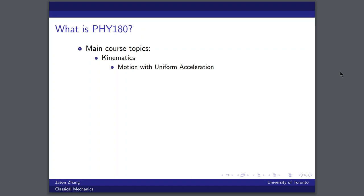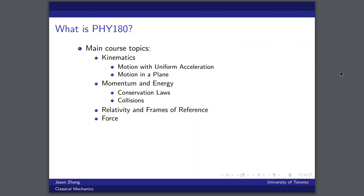As for the main course topics, we went over kinematics - that includes motion with uniform acceleration, motion in the plane, so 2D kinematics. We also talked about momentum and energy as well as their respective conservation laws and when to apply them. A specific example of when we used momentum and energy was when looking at collisions, which was a major part of this course. Furthermore, we go into a little bit of relativity and talking about inertial frames of reference. We talked about force and work and we talked about circular motion.